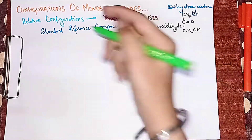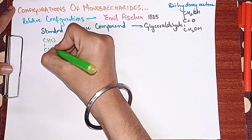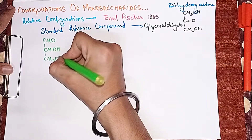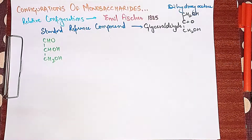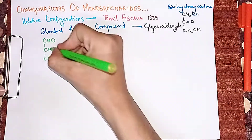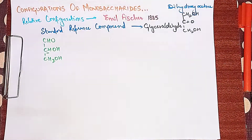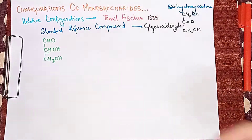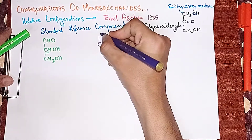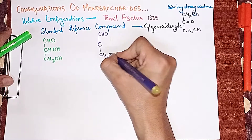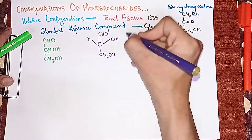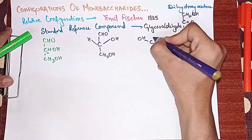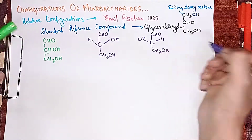Friends, Glyceraldehyde — its IUPAC name is 2,3-dihydroxypropanal. When we observed 2,3-dihydroxypropanal, it had only one stereocenter, which is one chiral carbon with four different groups attached. From this chiral carbon, we can derive different enantiomeric forms, so two enantiomers are possible.